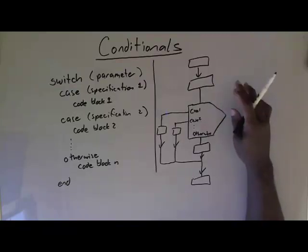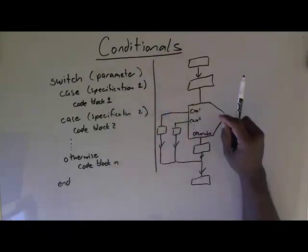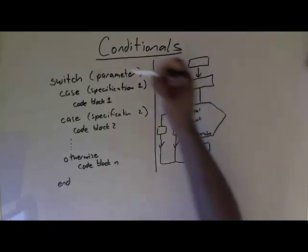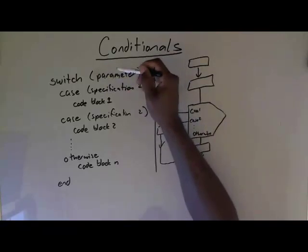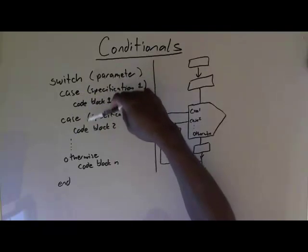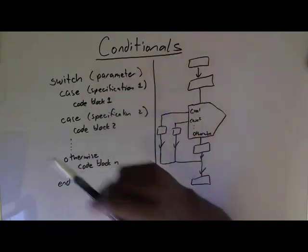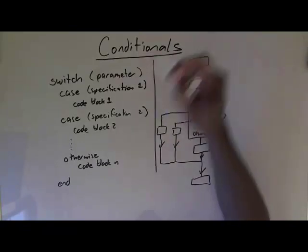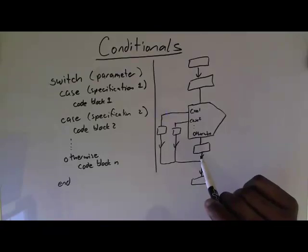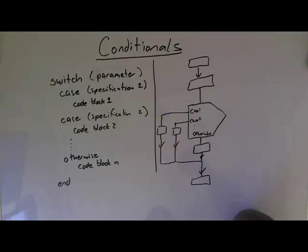That's the general switch statement — sort of like a menu. You present a parameter, compare it to all the case statements, and whichever one is true, that's the code block you execute. If none are true, you do what's in the otherwise. Now let's go to MATLAB and look specifically at how to implement this.